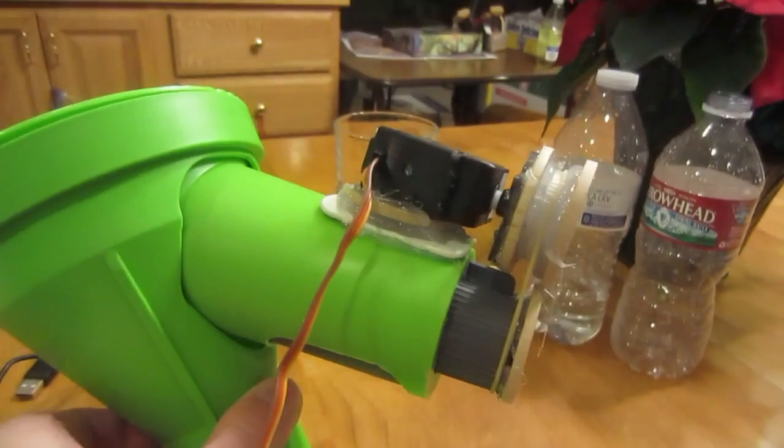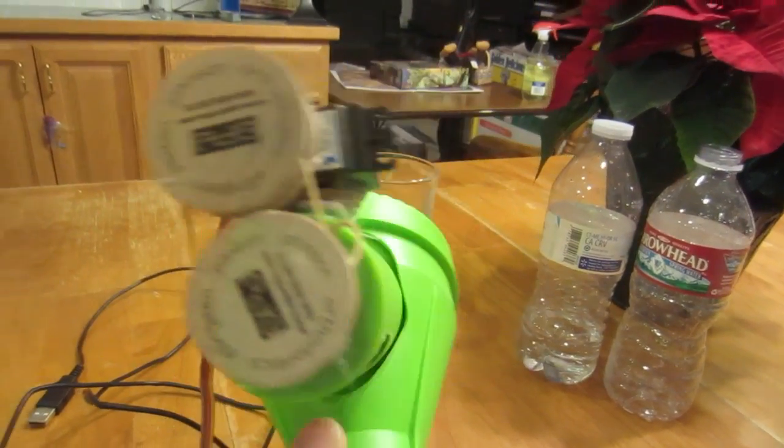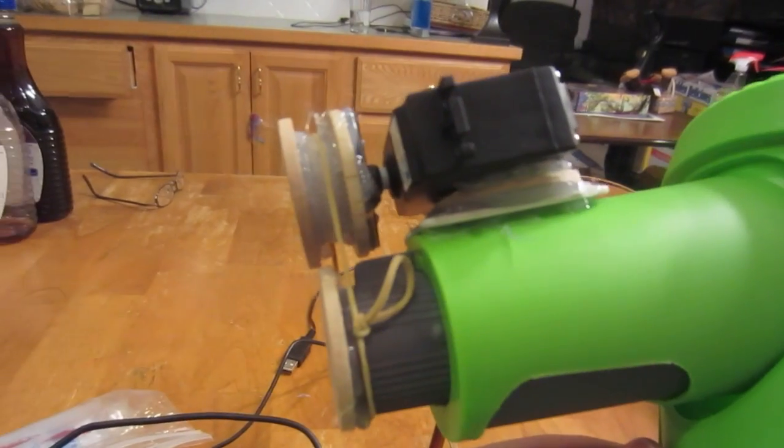Oh yeah, so I hot glued them on to the candy dispenser and made a little belt drive. Attached the continuous rotation servo up there and used a rubber band as a belt.